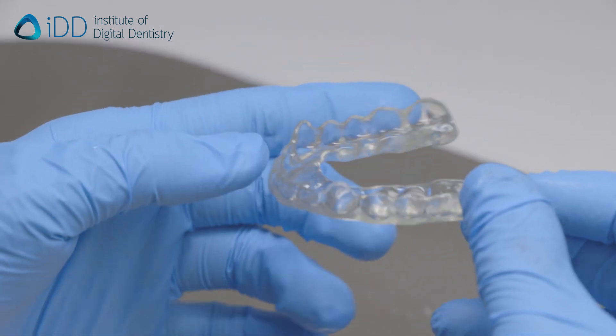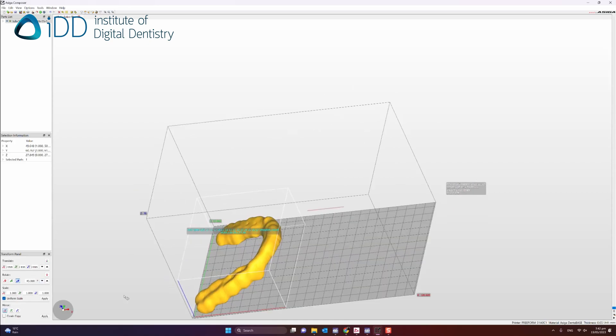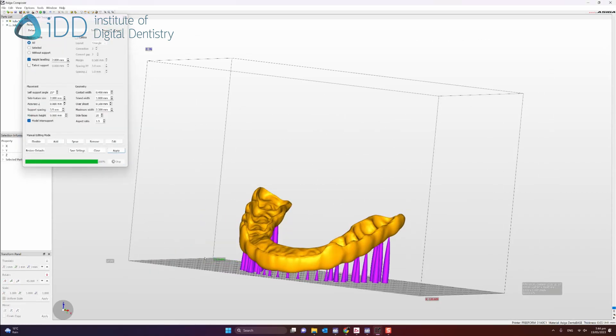Let's learn how to 3D print splints and nightguards. Get your splint design file and import it into the printer software. Nest the splint and get it ready for printing.